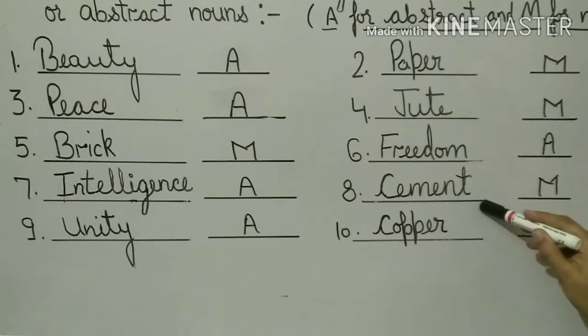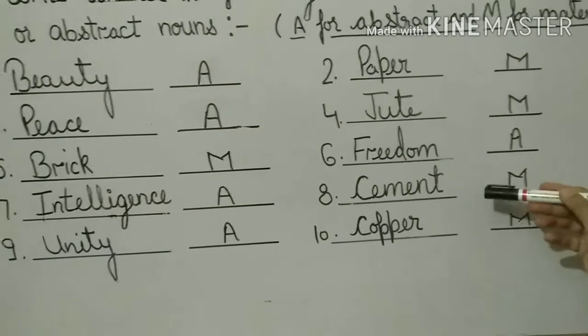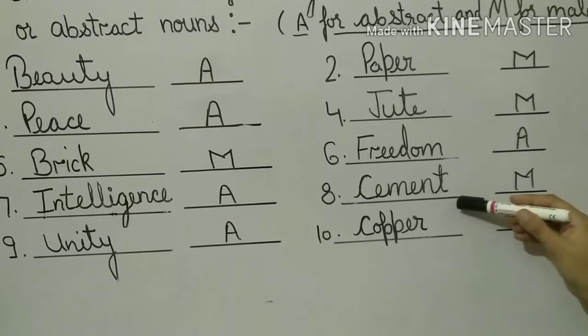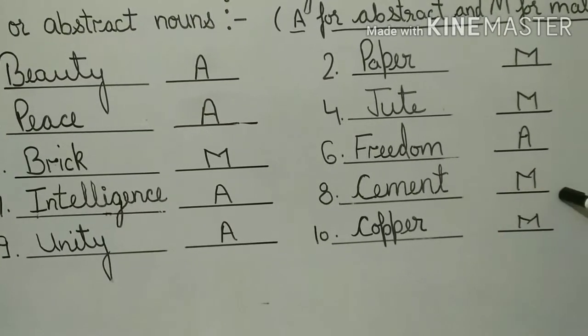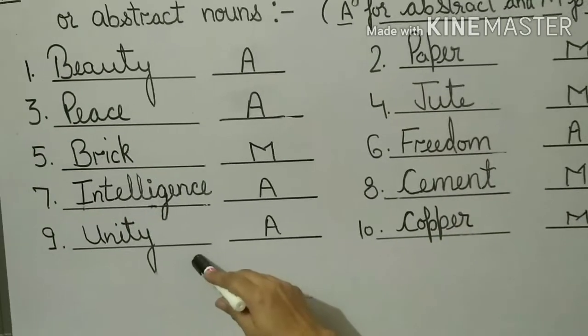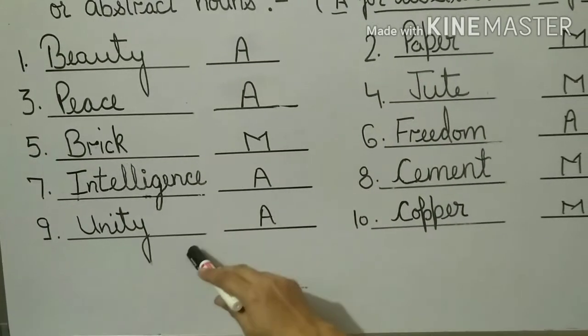Cement. Cement is a material. We can make walls or many things with it. So cement is a material. Unity. Unity is abstract noun. That also we can feel.